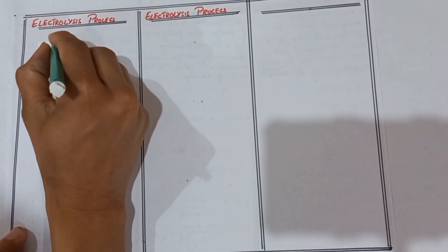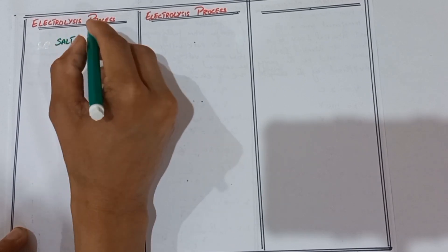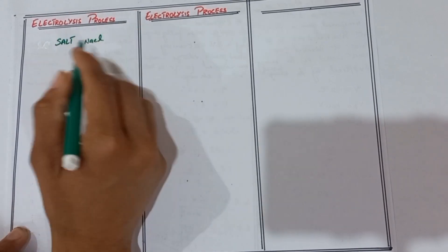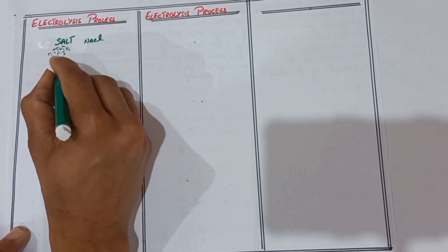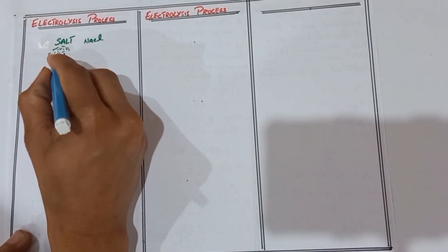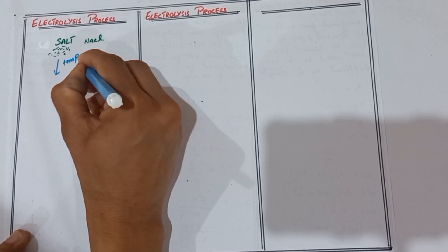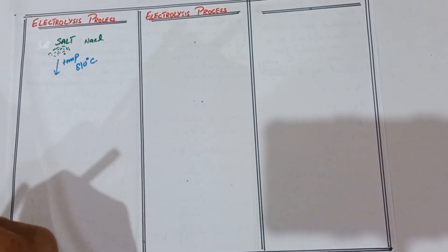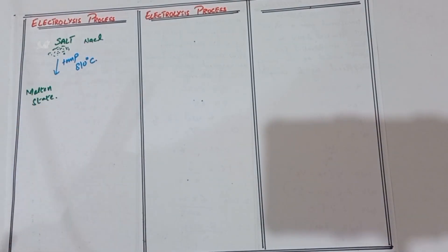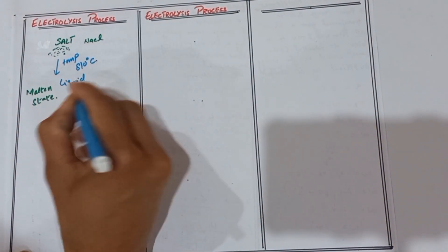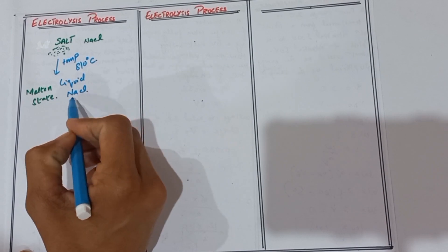In the electrolysis process, we take salt, NaCl (sodium chloride). We heat this solid salt to a temperature of 810 degrees Celsius to convert it into molten state.